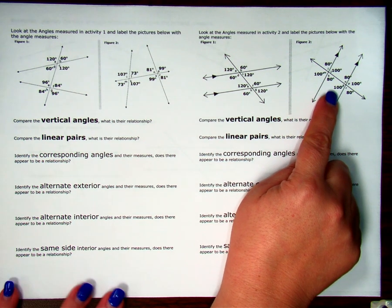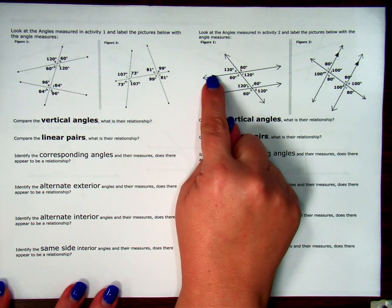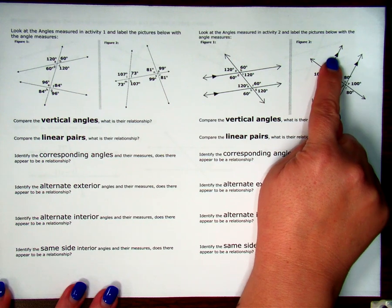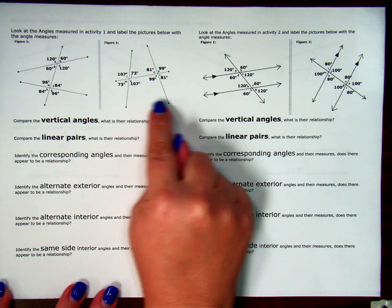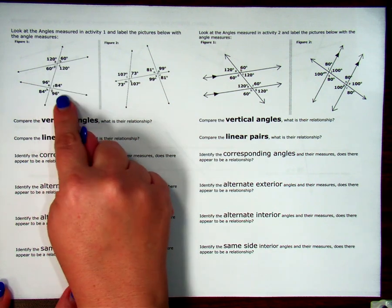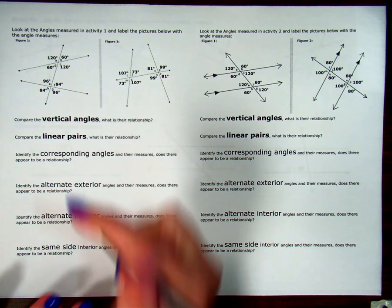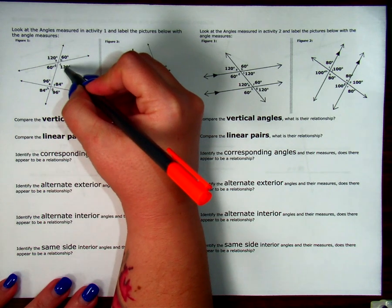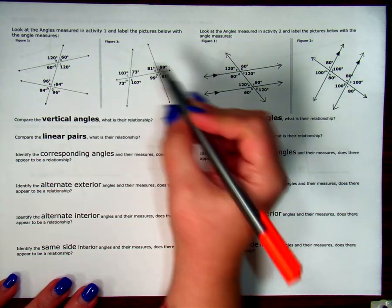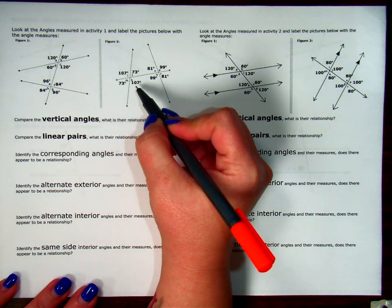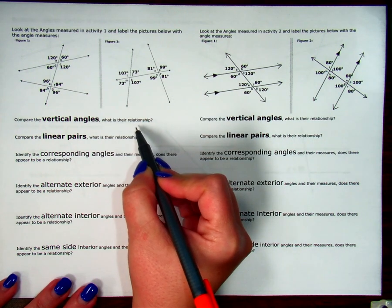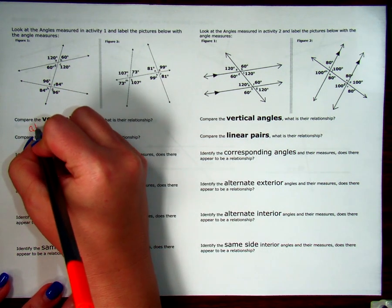Now I want to look and see if there are any patterns. I have some markings on two sets of the lines — these little triangles tell us those lines are parallel, whereas over here my lines are not parallel. First, I want to compare vertical angles on the non-parallel lines. Looking at vertical angles: 120 and 120 — they're the same. 60 and 60 — the same. 96 and 96, 84 and 84, 107 and 107, 73 and 73, 99 and 99, 81 and 81. So vertical angles are always congruent — they always have equal measures.